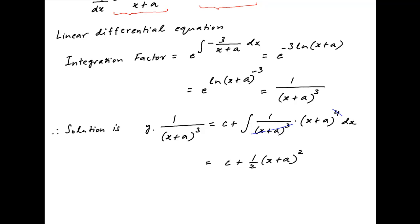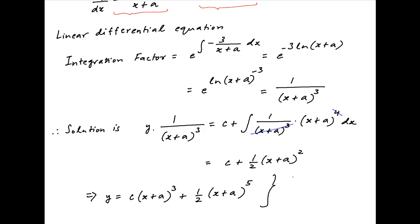Multiplying both sides by (x + a) raised to the power 3, we get y is equal to c times (x + a) raised to the power 3 plus half of (x + a) raised to the power 5, which is the required solution.